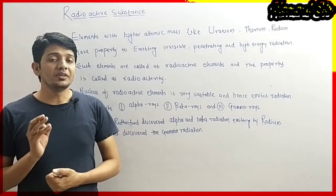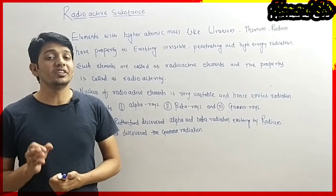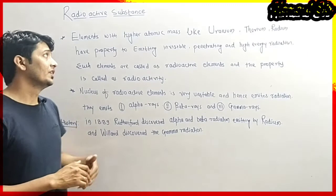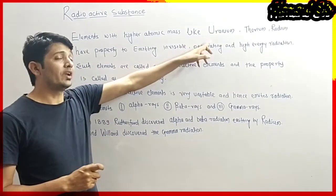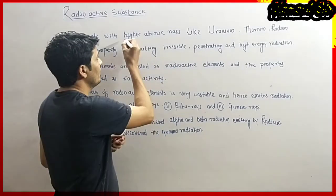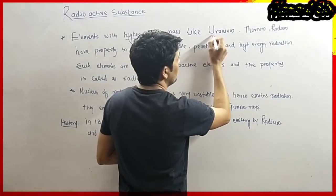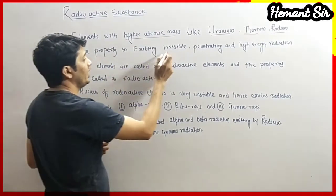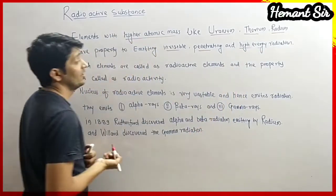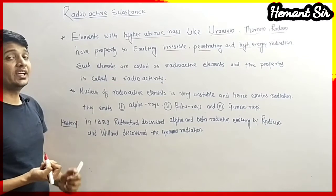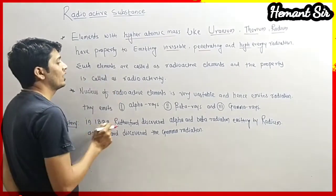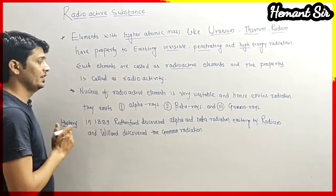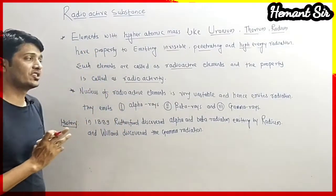Radium, Thorium, and Uranium emit different kinds of radiation, and these radiations are very useful as well as harmful. Elements with higher atomic mass like Uranium, Thorium, and Radium have the property of emitting invisible, penetrating, and high-energy radiation. Such substances or elements are called radioactive elements, and the property of such elements to emit radiation is called radioactivity.